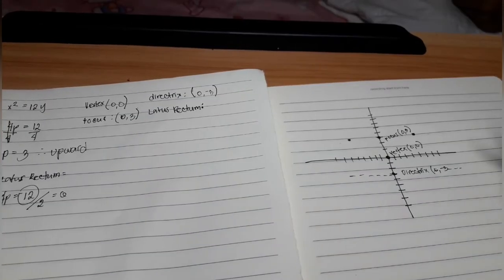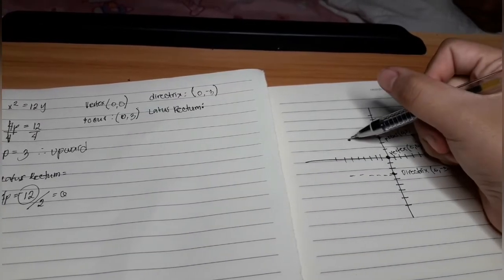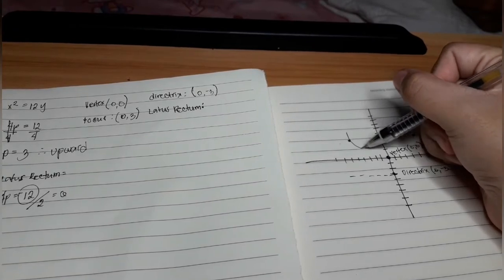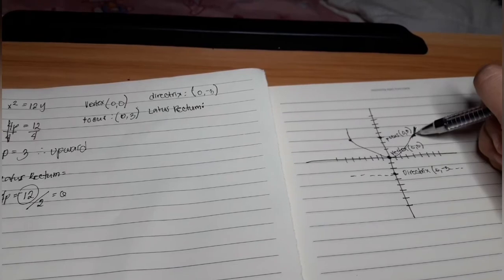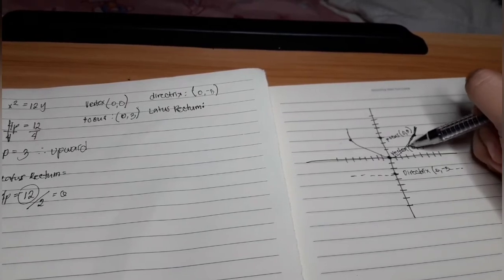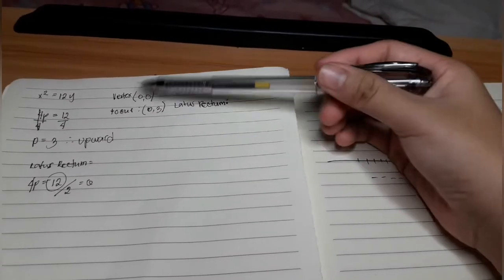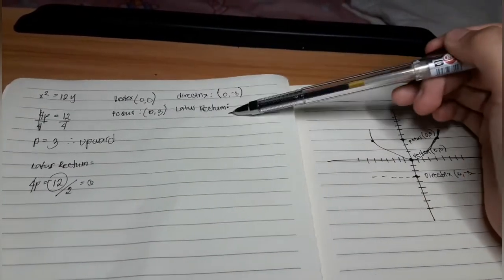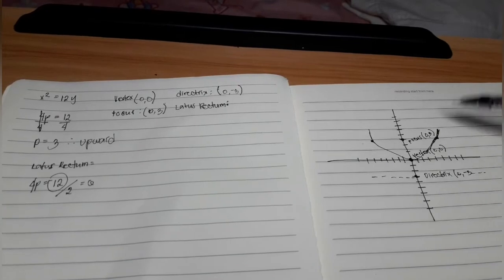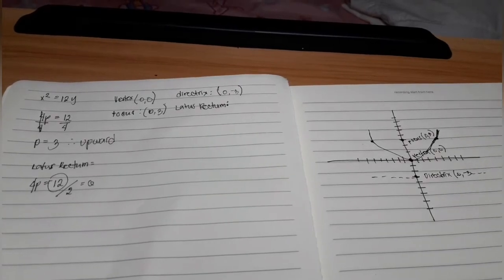What we are going to do is to graph our parabola. We already got the vertex, the focus, the directrix, and the latus rectum. We also have a graph of parabola.